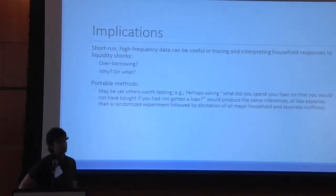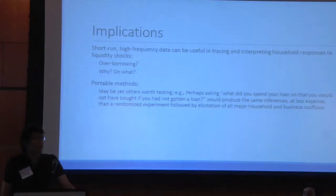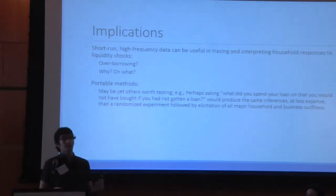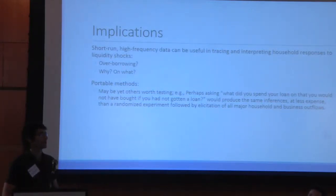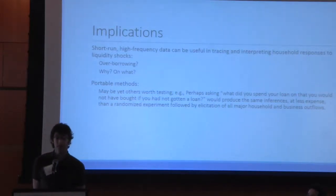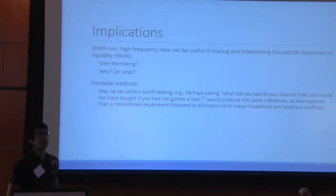One thing we're now thinking about is tweaking some of these survey questions in ways that might allow direct survey elicitation to better get at this counterfactual — which in this paper we're only able to get at through the combination of random assignment and fairly detailed and expensive surveying. We're interested in testing the possibility that maybe asking people directly, 'What did you spend your loan on that you would not have bought if you had not gotten the loan?' — actually walking people through the counterfactual — might produce equally valid and useful results going forward. Thank you very much.